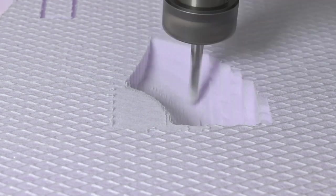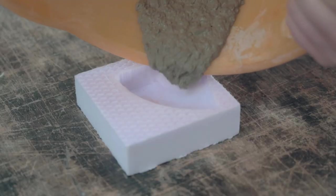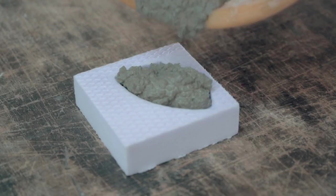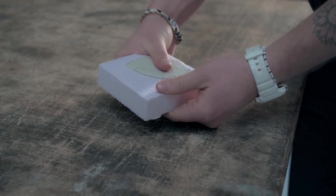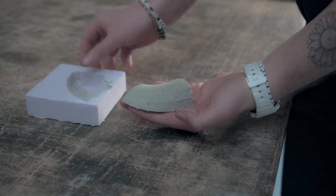There is always the possibility to build a model that is the negative of the model, so a casting takes place, or to directly build the positive model and in this way create a real model from the milling material.